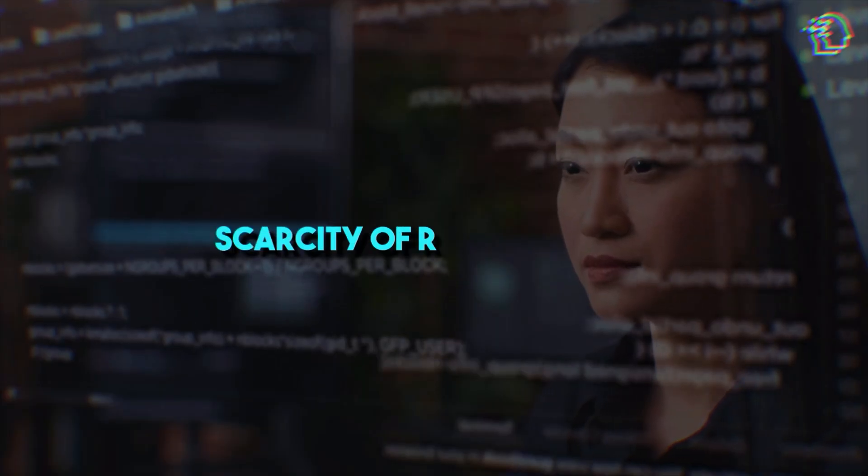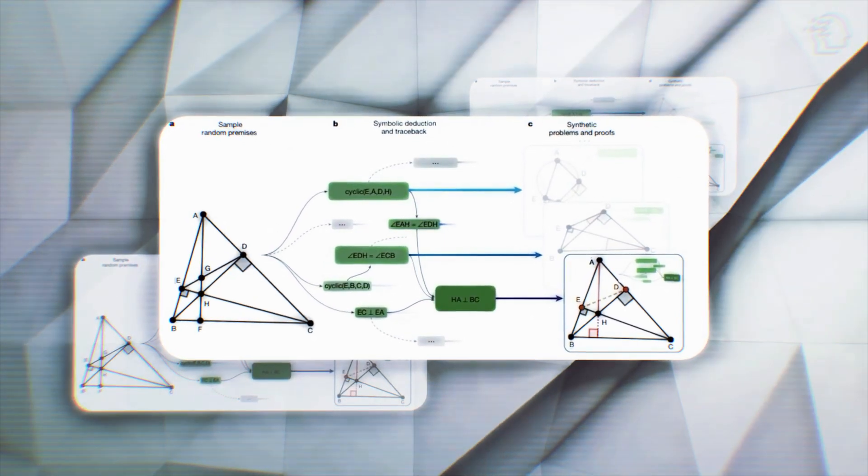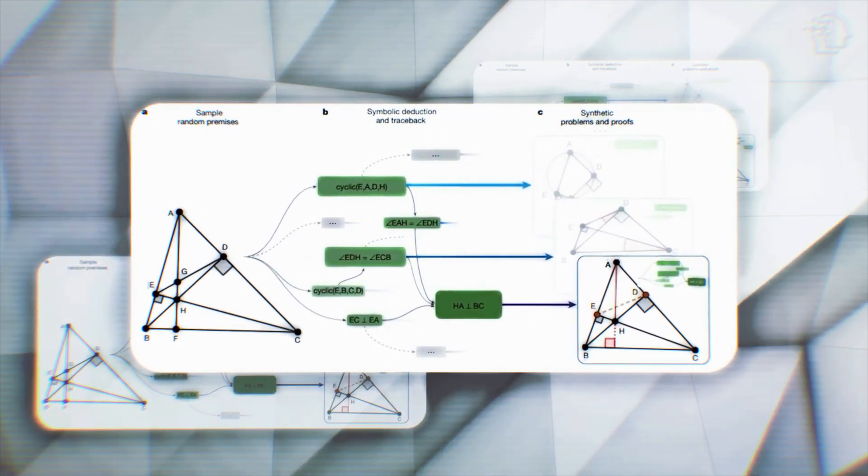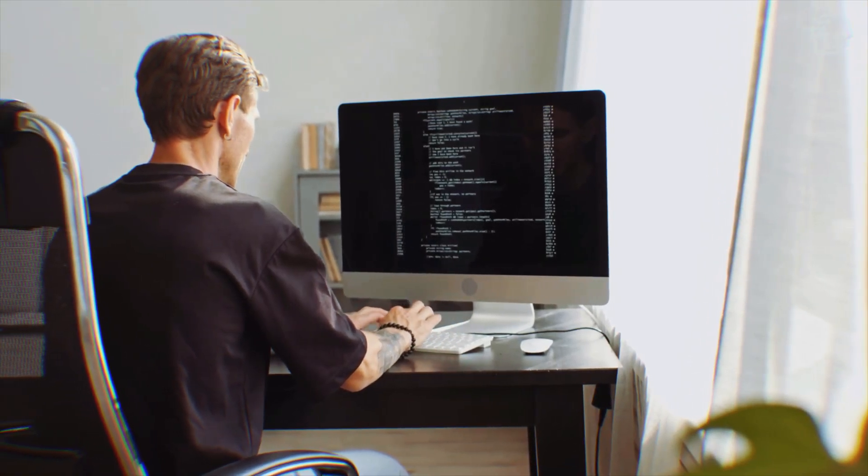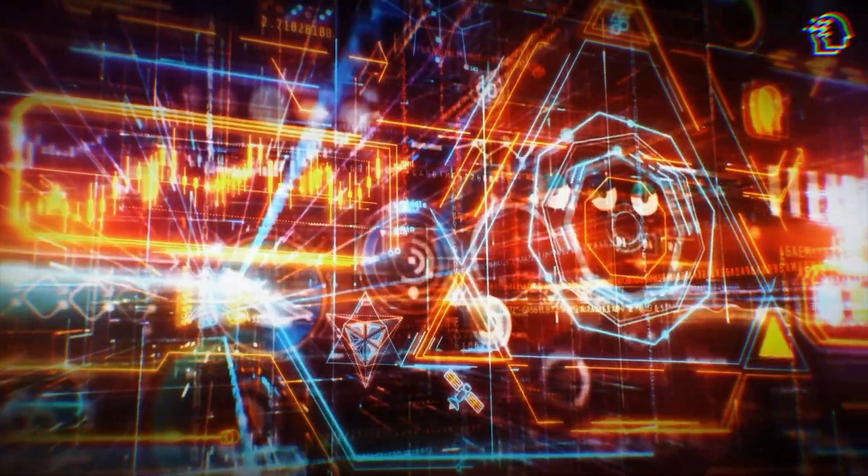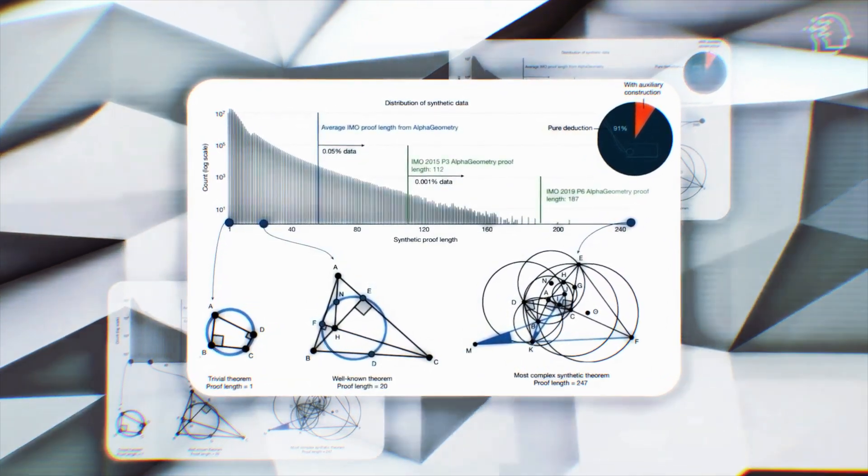One major challenge in geometry AI is the scarcity of relevant data. AlphaGeometry leaps over this hurdle with synthetic data generation. It starts by generating random theorem premises, which feed into the symbolic deduction engine. This engine builds directed acyclic graphs mapping out each logical step to a conclusion. It's a crucial process for grasping and solving those brain-twisting geometric theorems.